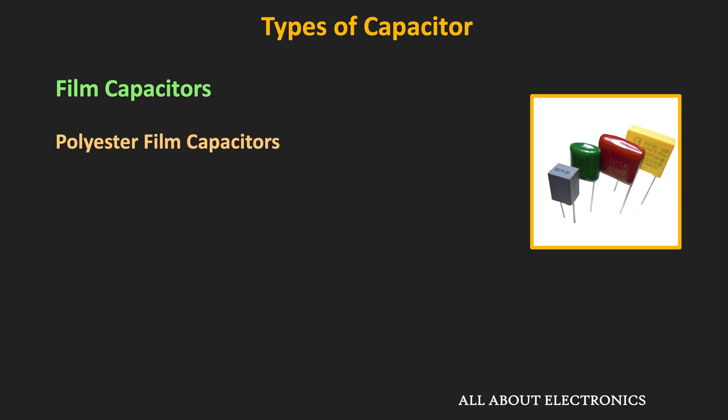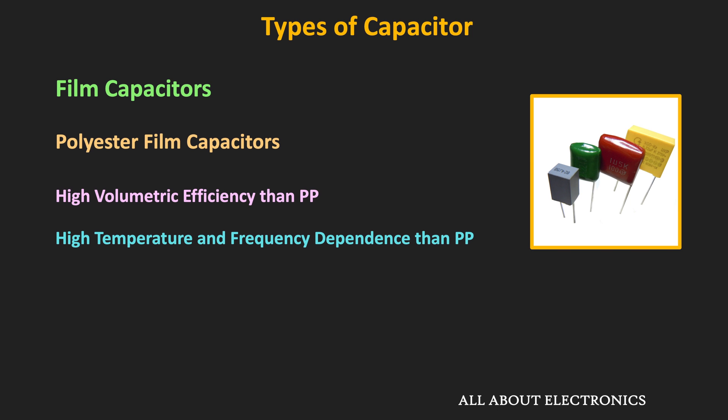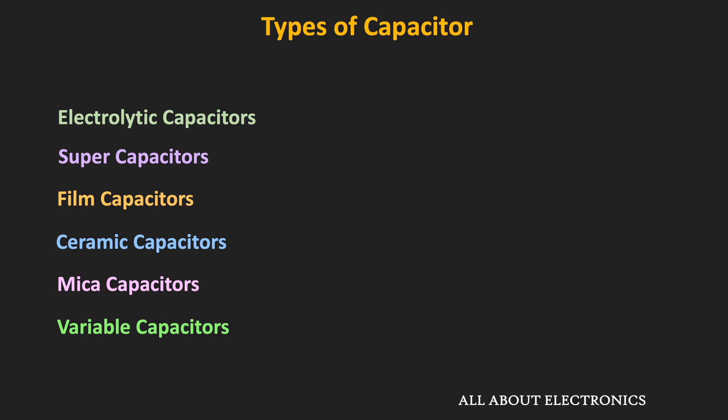Polyester film capacitors have higher volumetric efficiency than polypropylene capacitors, but their capacitance may change with frequency and temperature. Typically, polyester film capacitors are used in general purpose applications. Ceramic, film, and electrolytic capacitors are among the most widely used types in the industry, but in many applications, other types of capacitors are also used.